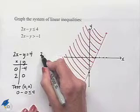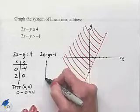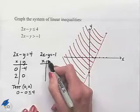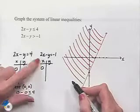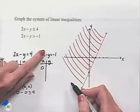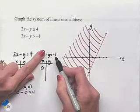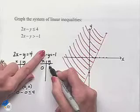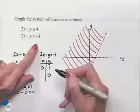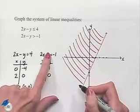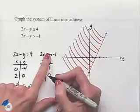Next, let's look at our second linear inequality: 2x minus y is greater than negative 1. We'll use the same procedure and plot intercepts. Letting x equal 0 gives us negative y equals negative 1, so y equals 1. Letting y equal 0 gives us 2x equals negative 1, so x equals negative one-half.